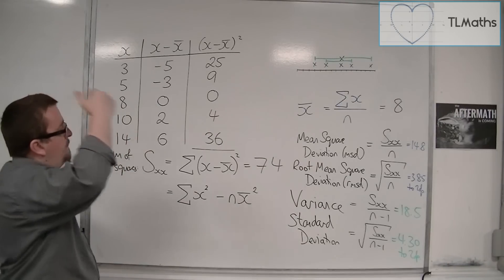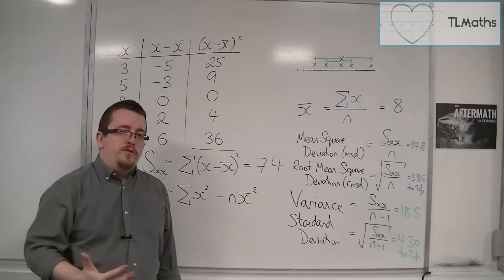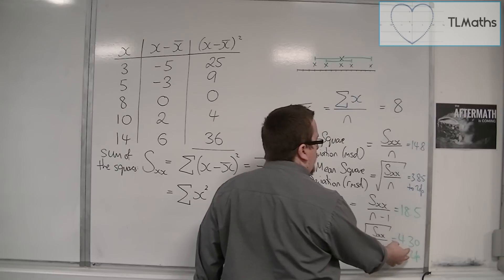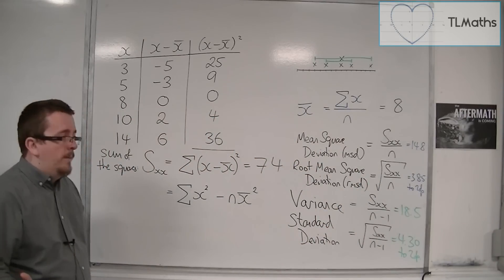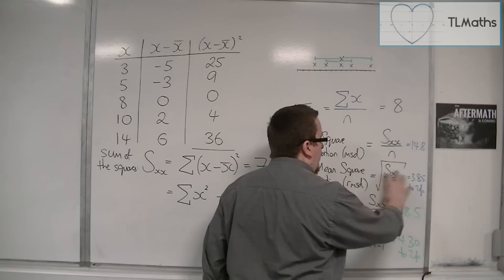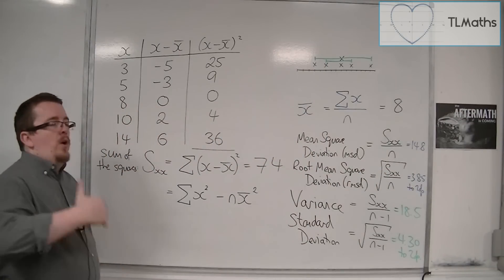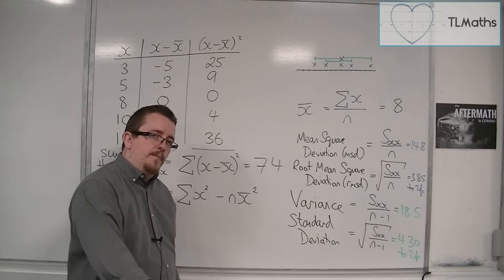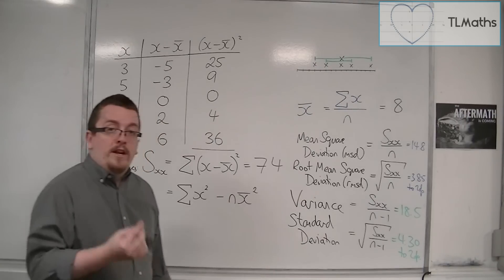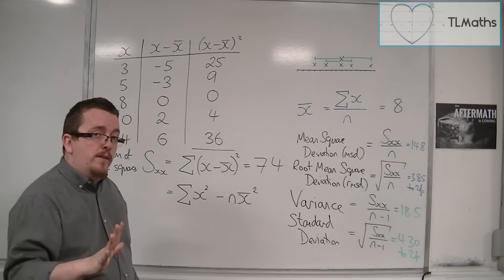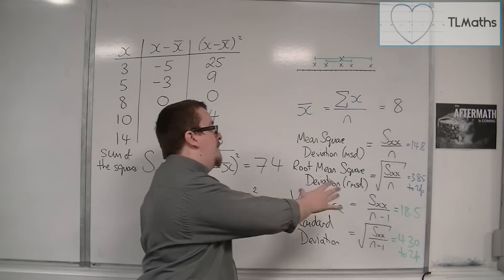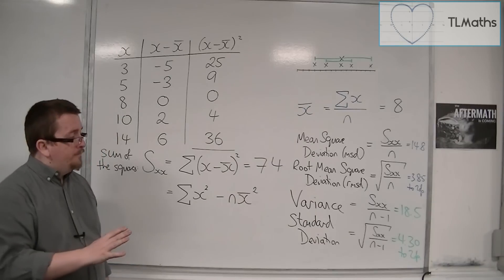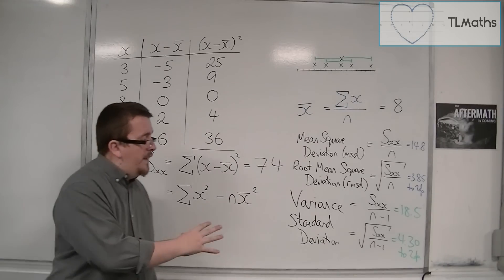So, in other words, if this was a sample of a parent population, then this would be an unbiased estimator for the population deviation, whereas this would not be. So, if you're asked to find the standard deviation, you must remember that you are dividing by n minus 1. But if you're asked to find the root mean square deviation, which, to be honest, in the exam is rarer, but can still come up, you must divide by n. And that's roughly what they mean. And we're going to see more of this in the coming videos.